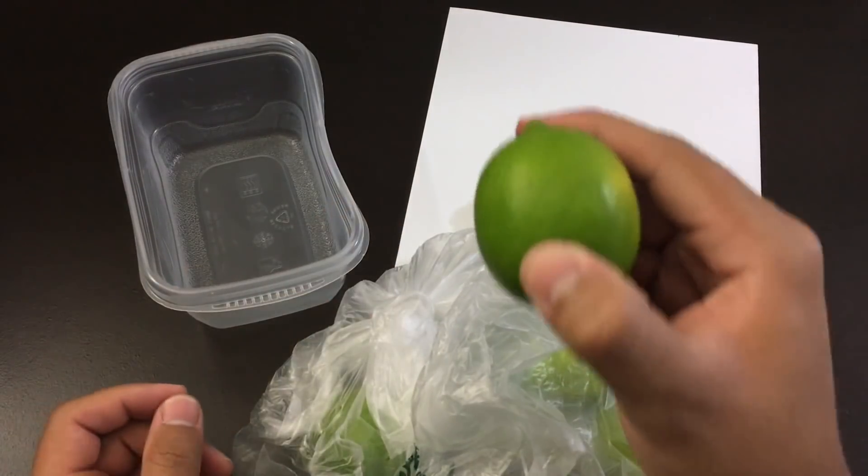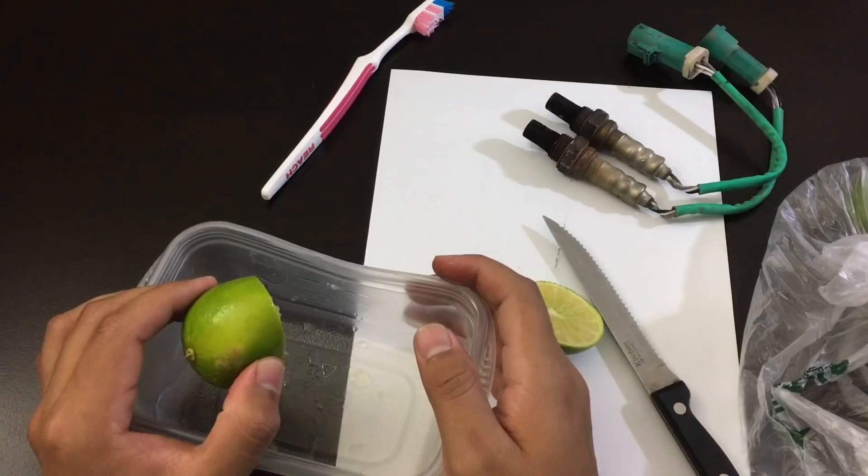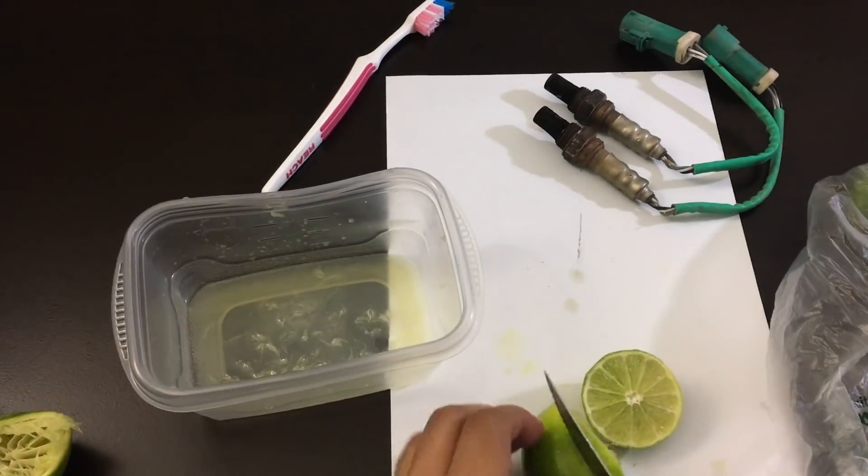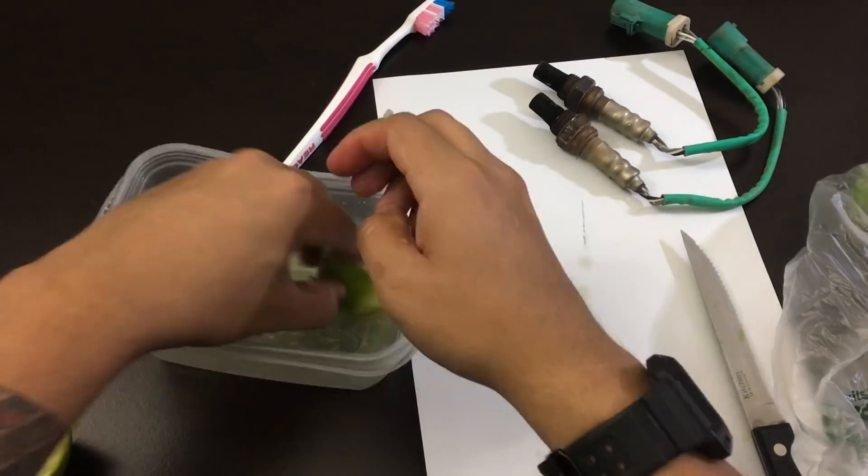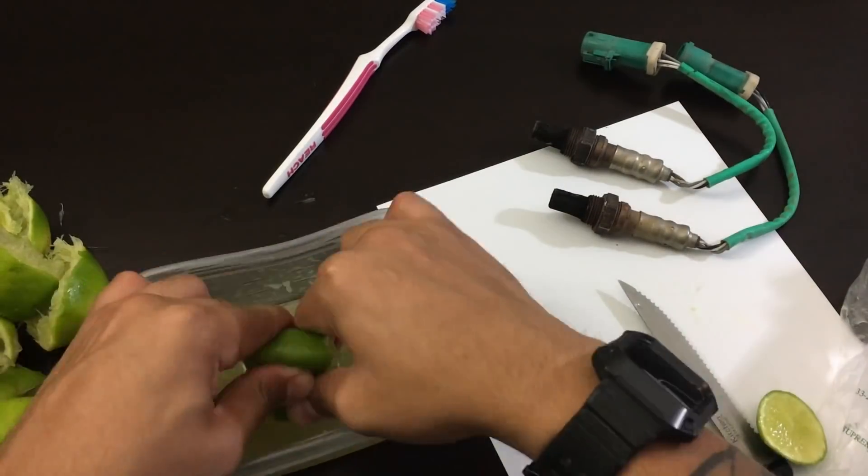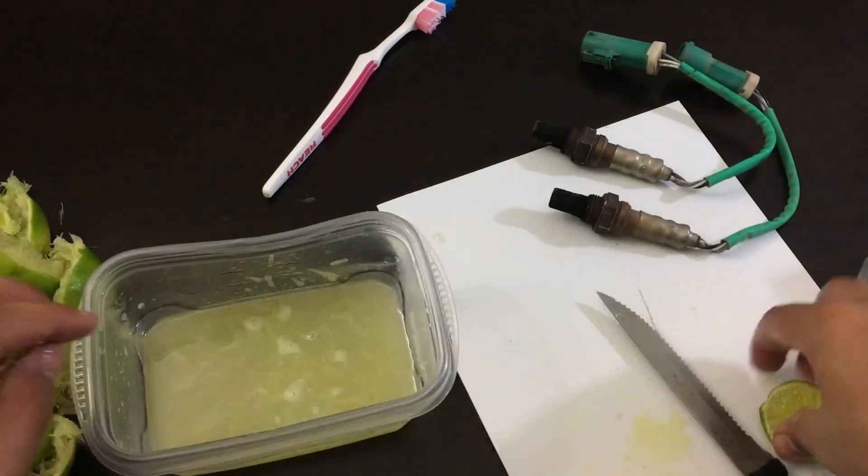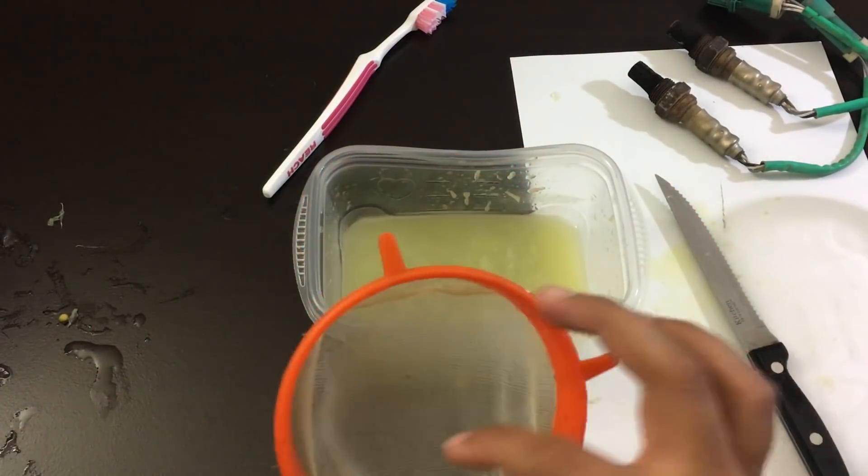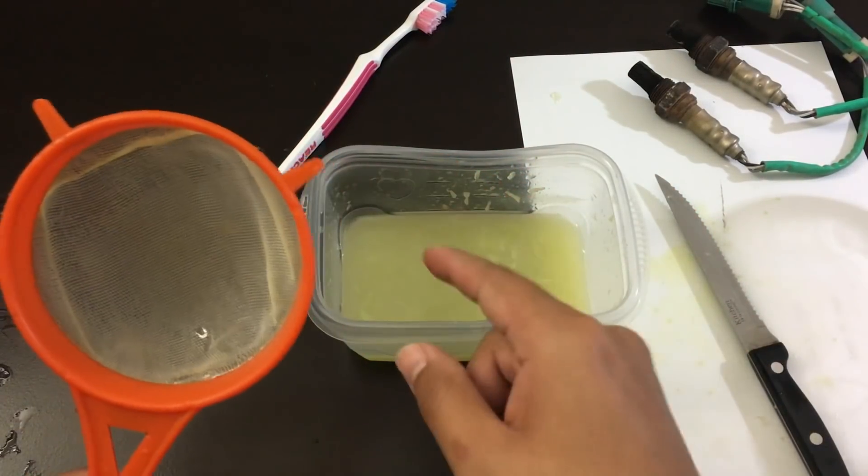Cut them in half and you're going to squeeze all of them in a container. Make sure you have one of these to catch any of the pulp, I think that's what it's called, that's inside the lemon juice.